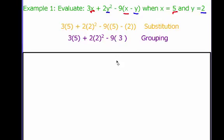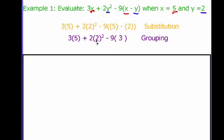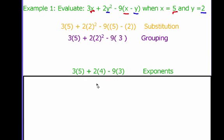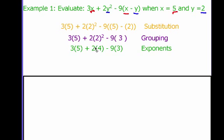Our next step in the order of operations is to do exponents. I've got 2 squared, and 2 squared is 4. So I end up with the expression 3 times 5 plus 2 times 4 minus 9 times 3. I've done my substitution, grouping, and exponents.